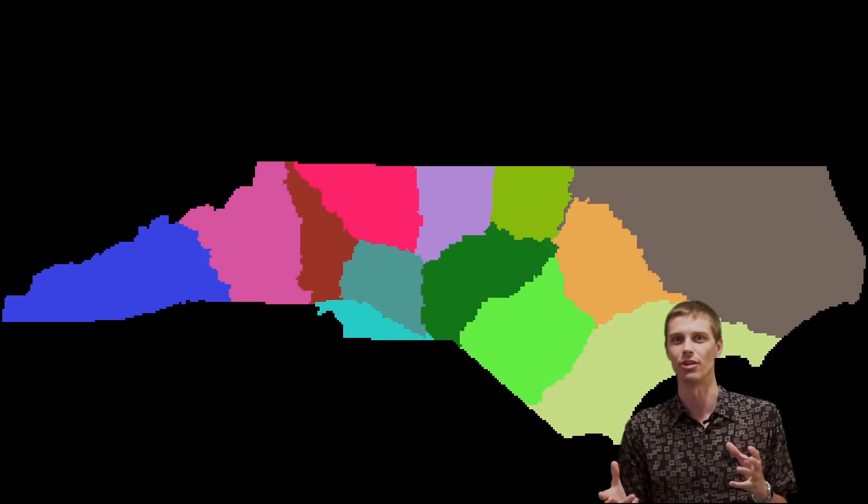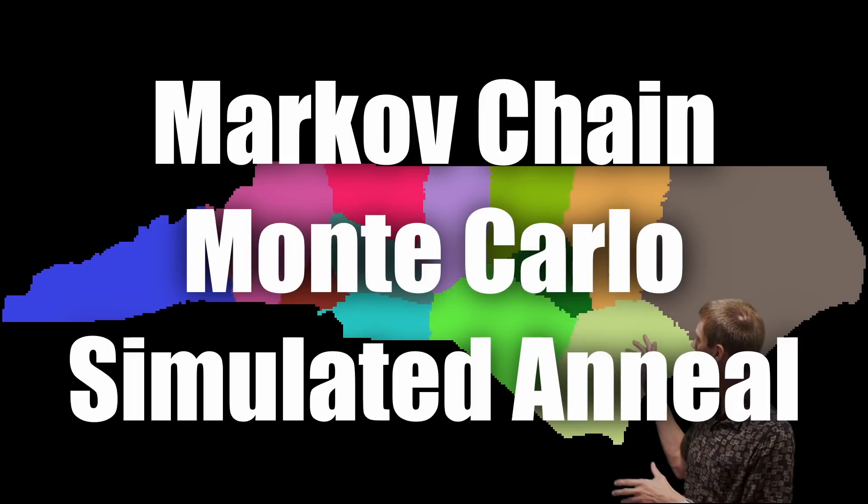I am between workshops and homes right now, so today I have a computational project for you that doesn't require the workshop. This map behind me is slowly rearranging itself according to a program I wrote that uses a statistical technique called a Markov Chain Monte Carlo simulated anneal. You can see it's about to get really fuzzy — and now it's going to get a little bit better.